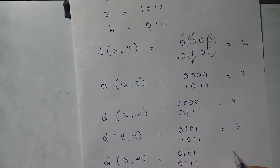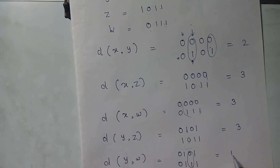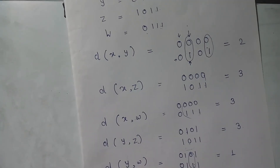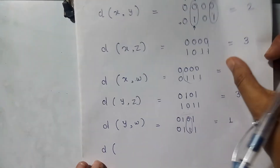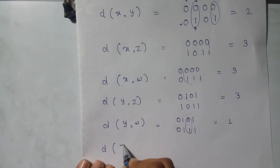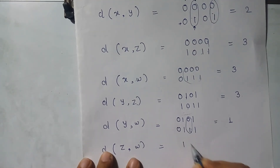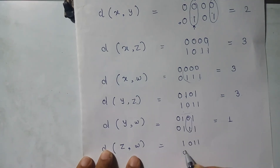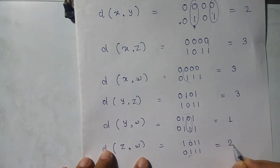For y and w: the Hamming distance is 1. For the last pair, z and w: comparing 1011 and 0111 — only two bits are different, so the Hamming distance between z and w is 2.